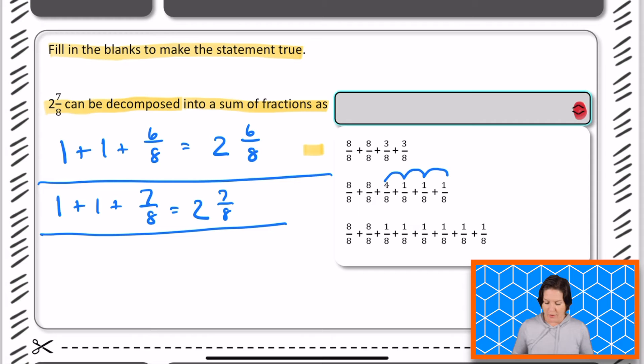So let's go prove it wrong, y'all. Let's do it. Looking at the next one, it is eight eighths, which is the same thing as one whole, plus eight eighths, which is the same thing as one whole, plus one, two, three, four, five, six eighths. That would be equal to two and six eighths.